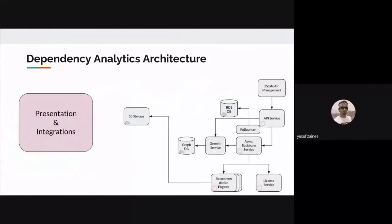The third and final part is presentation and integration. With all the data in place, we have two different flows: LSP calls for component analysis, and the full stack report. Both flows go into our API server, which internally uses backbone services that talk to our graph database. We also have recommendation engines from the AI and ML part, along with our own license compliance services. It interacts with all these services, aggregates all the information, and returns a comprehensive stack report to the user.